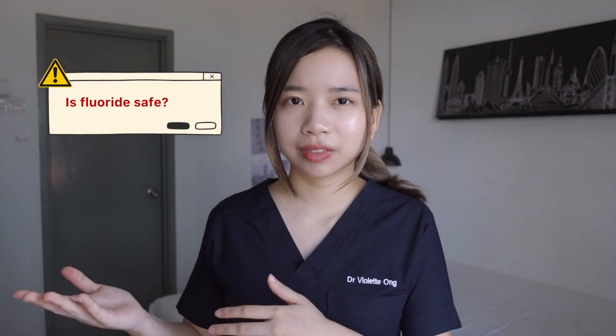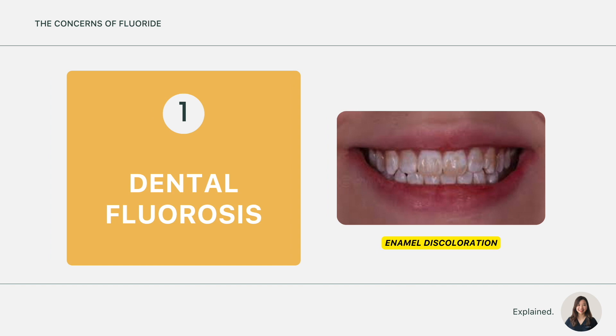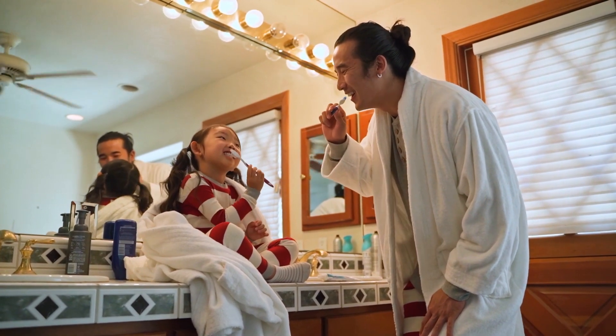So is fluoride safe? The answer is yes, if it's within recommended levels. And is fluoride dangerous? Also yes, if above recommended levels. In my opinion, the only valid concern we should have about fluoride is the risk of dental fluorosis. It is an enamel discoloration that can happen when children ingest excessive amounts of fluoride toothpaste during phases of tooth formation. Note that it is caused by fluoride ingestion and not by direct fluoride contact on the tooth surface, which means it is unlikely to happen if a child is able to spit out the toothpaste after brushing. This is why we always educate parents to supervise their child during tooth brushing. But even if you end up with dental fluorosis, it is mostly mild and just an aesthetic concern — a simple procedure at the dentist will give you back your pearly whites in no time.